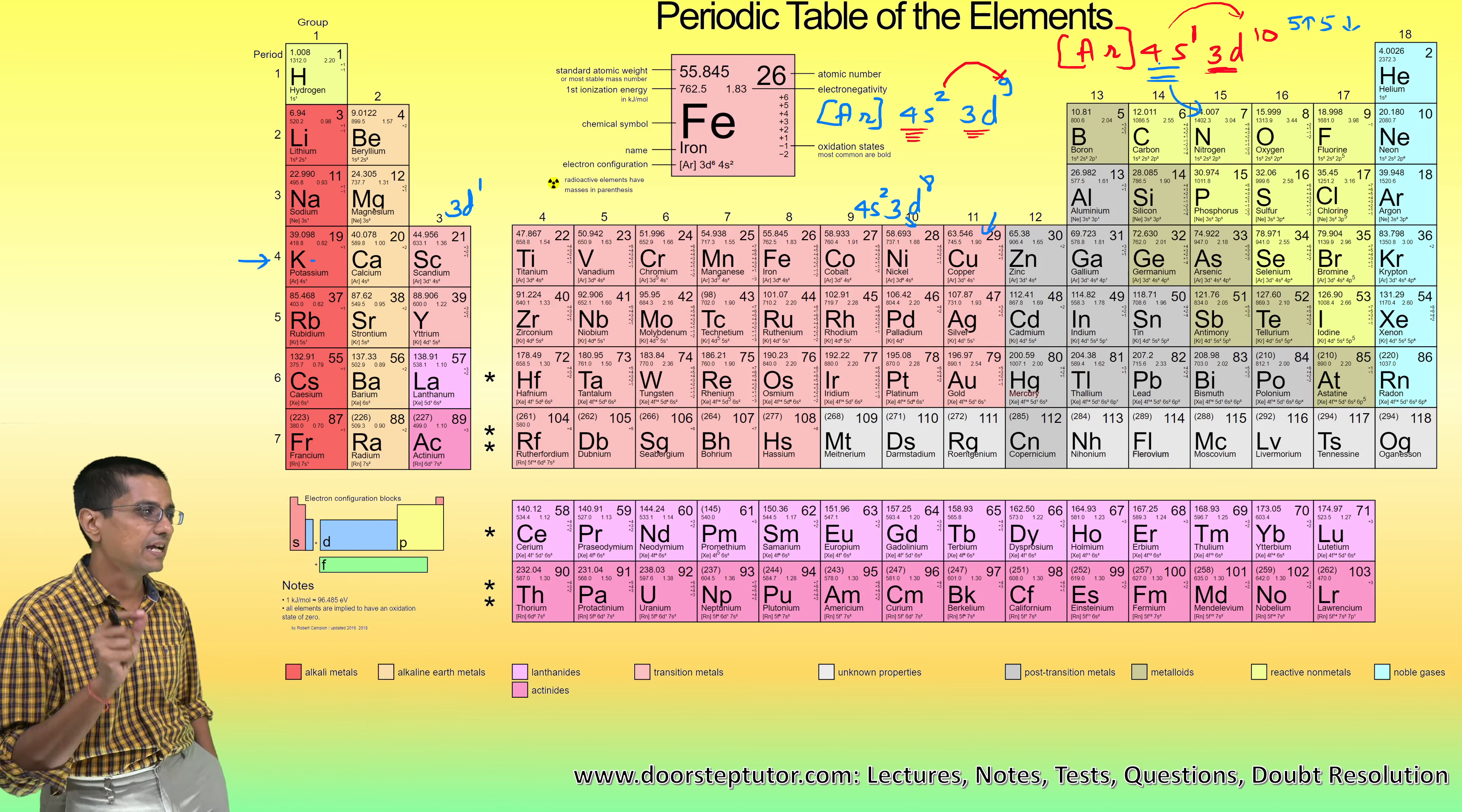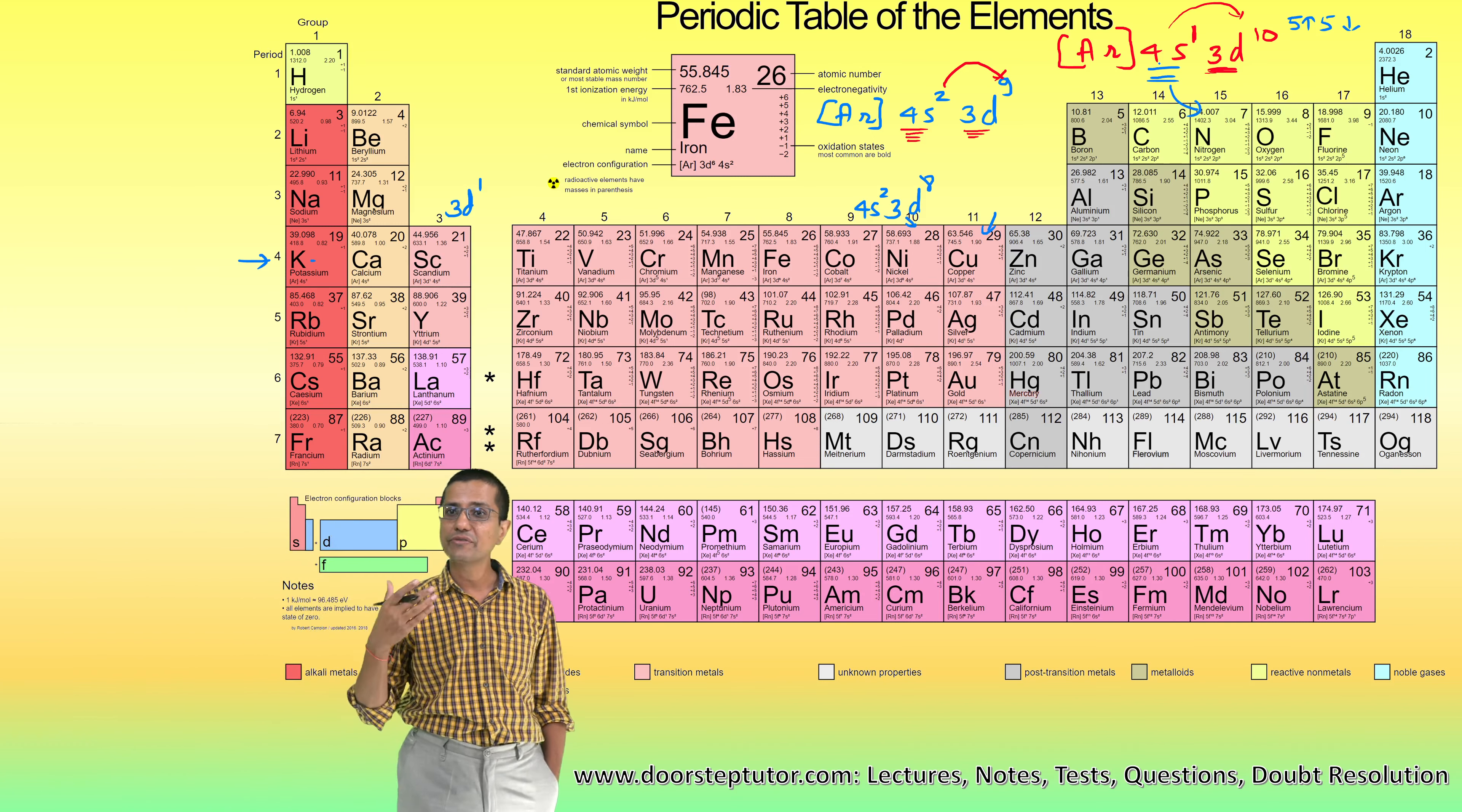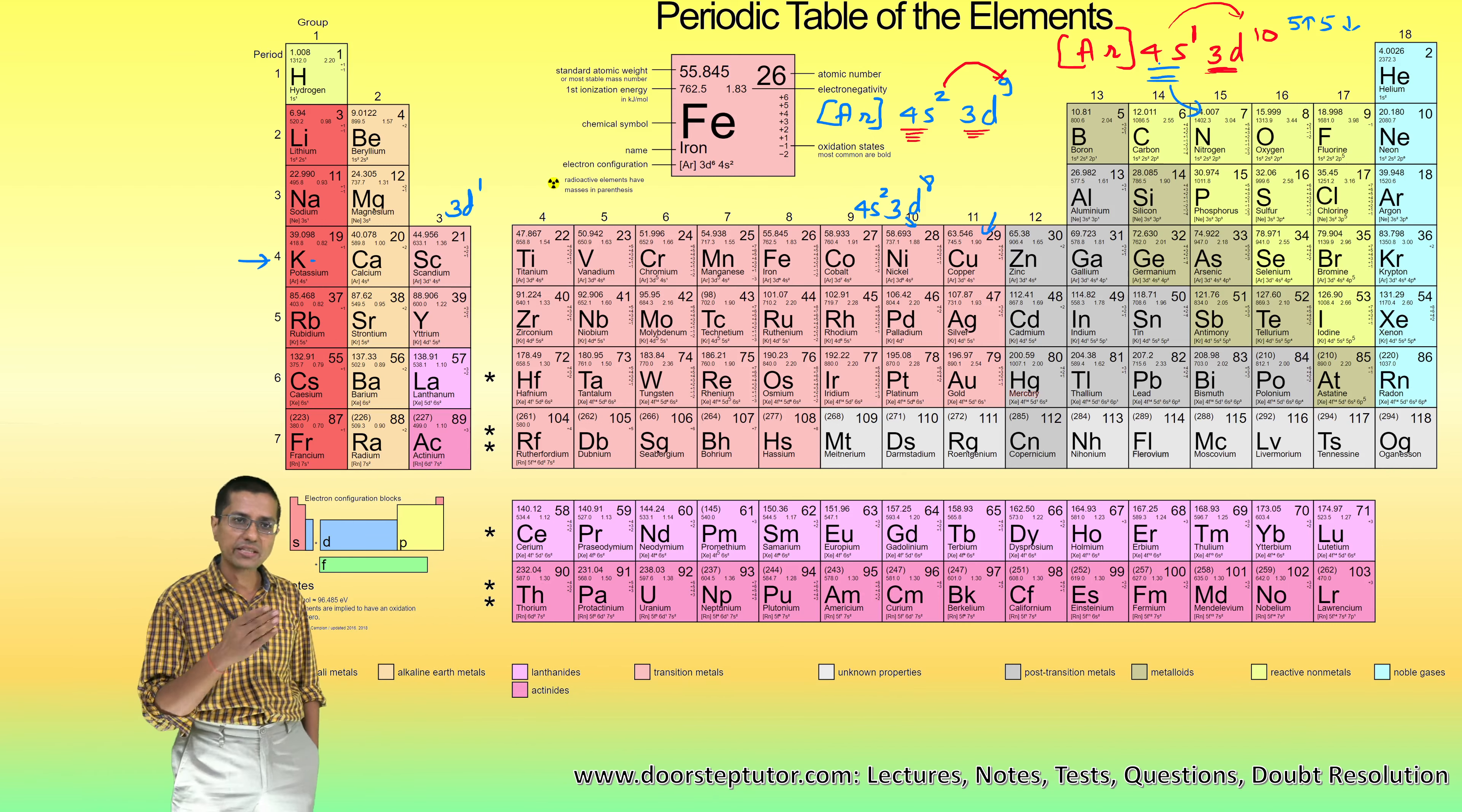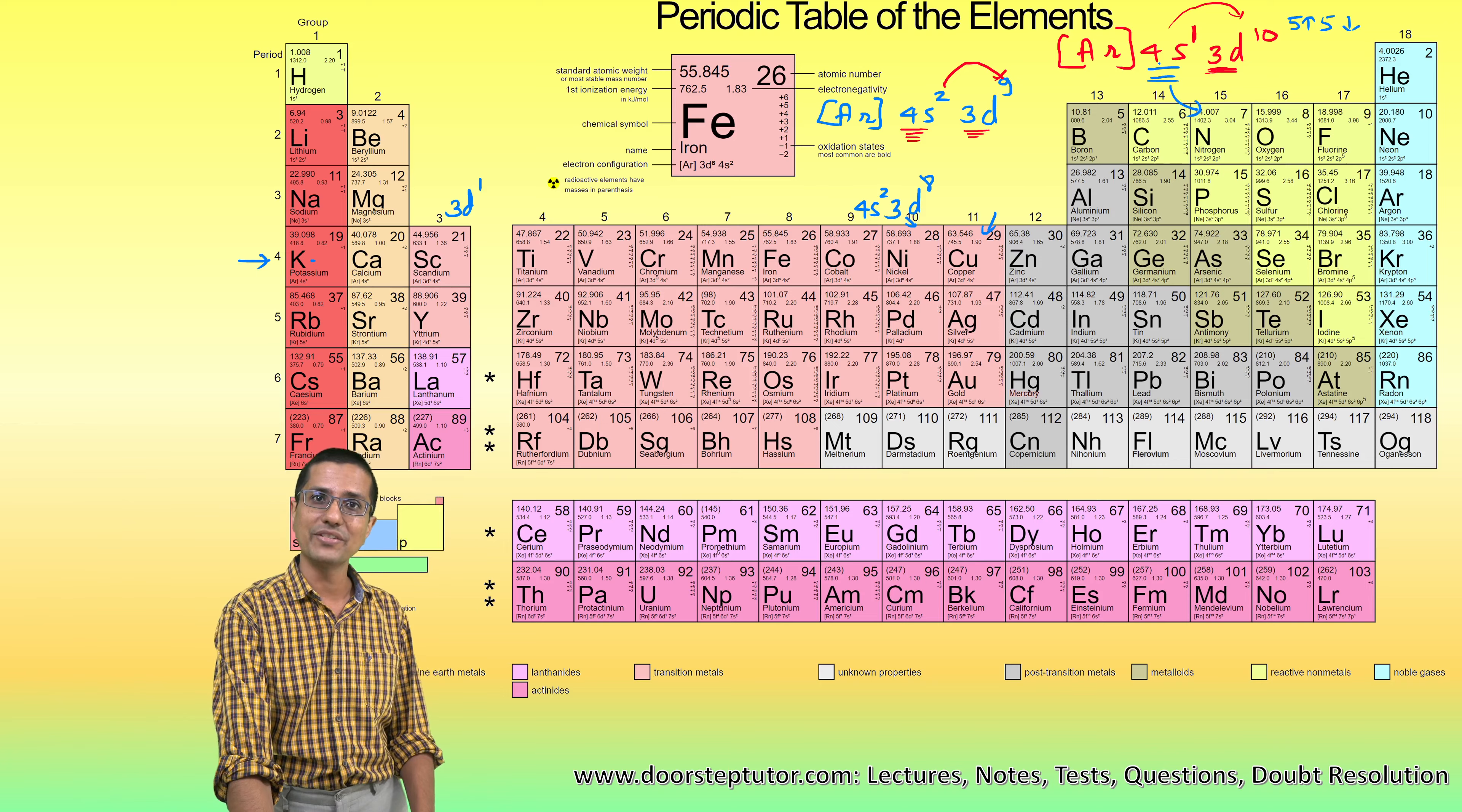Copper also has two rare valencies: +3 and +4, which it forms by losing more and more electrons from its 3d sub-shell. Hopefully things are very clear in terms of copper—very important questions from the perspective of your exams. Thank you.